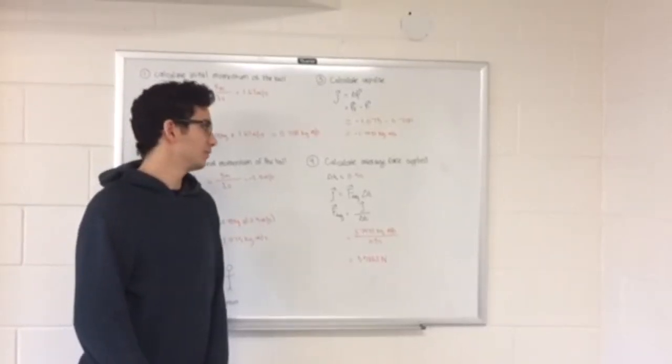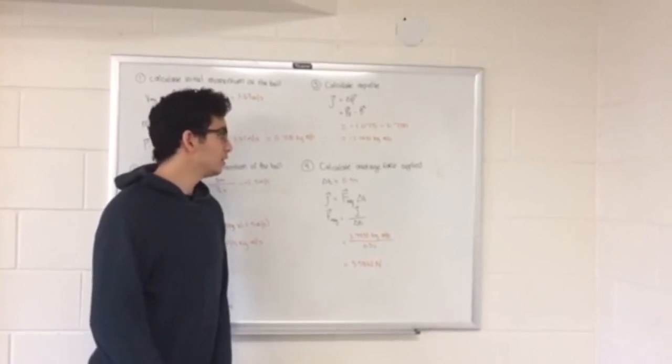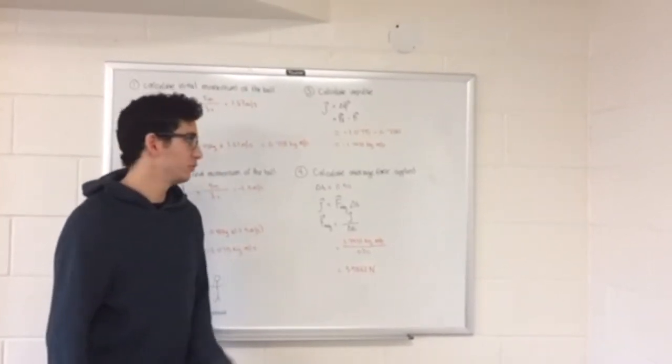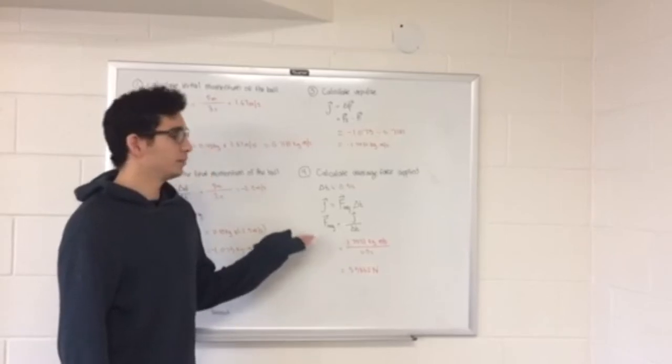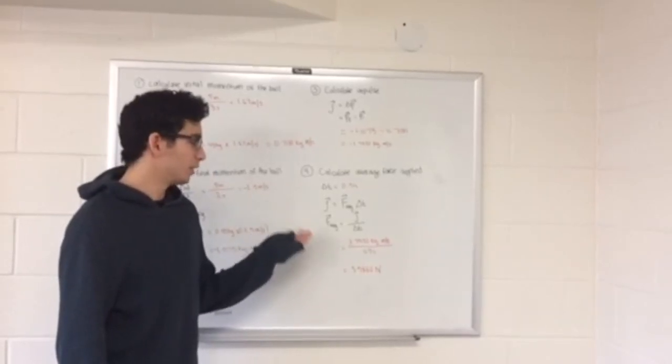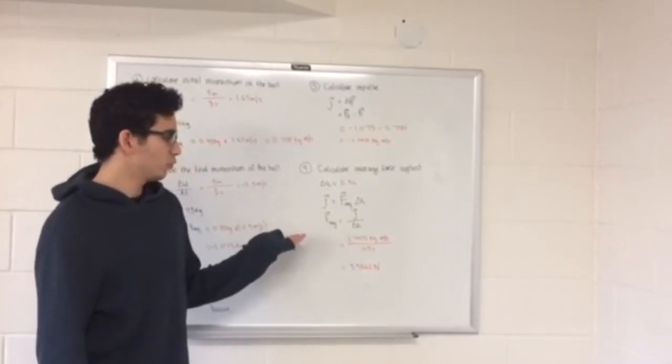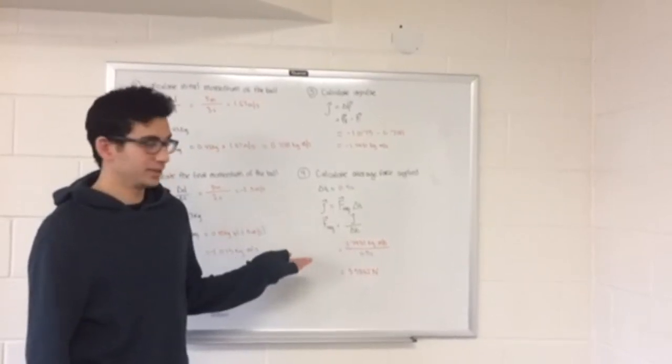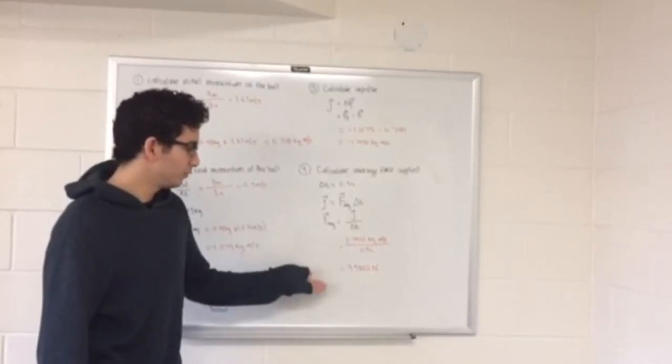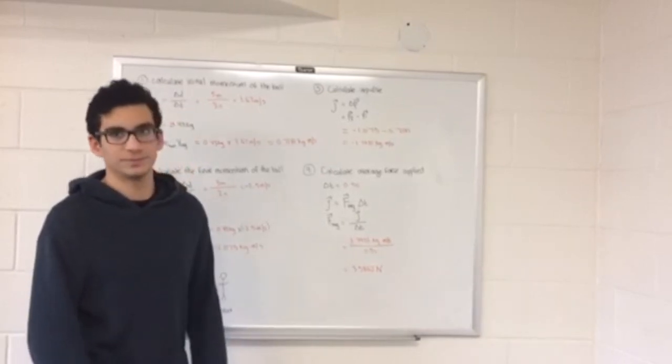The fourth step is to calculate the average force applied. We know that the ball was in contact with my foot for 0.5 seconds, and we know that the impulse equals the average force multiplied by time. Therefore, we know that the average force equals the impulse divided by time. And when we do the math, we get 3.5862 newtons.